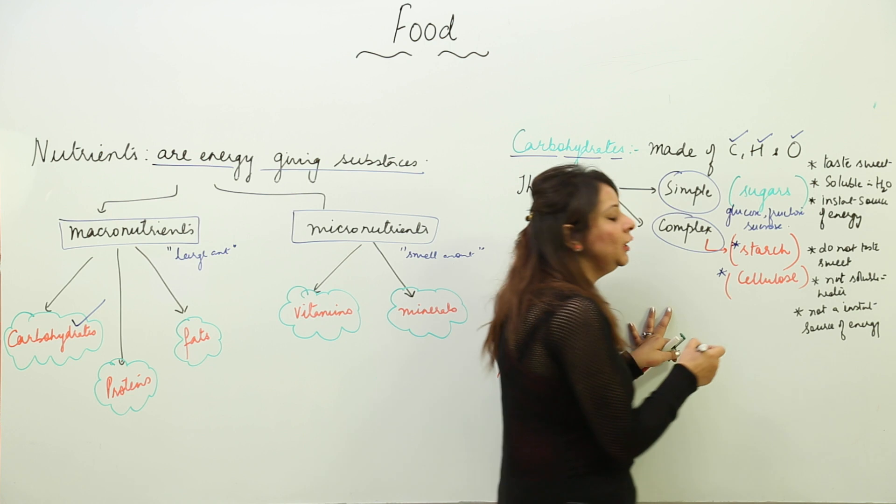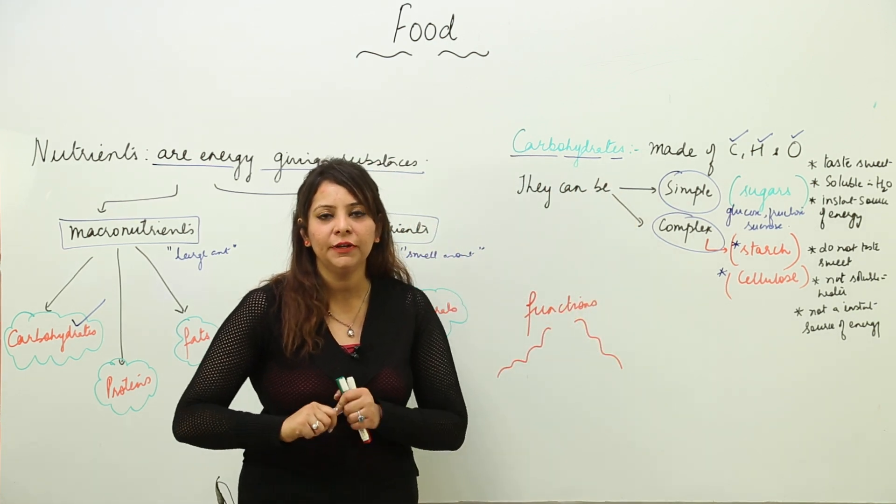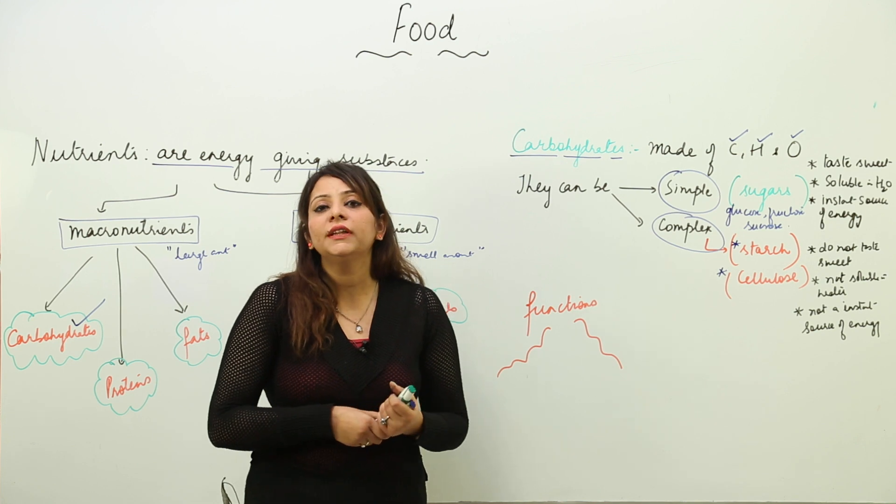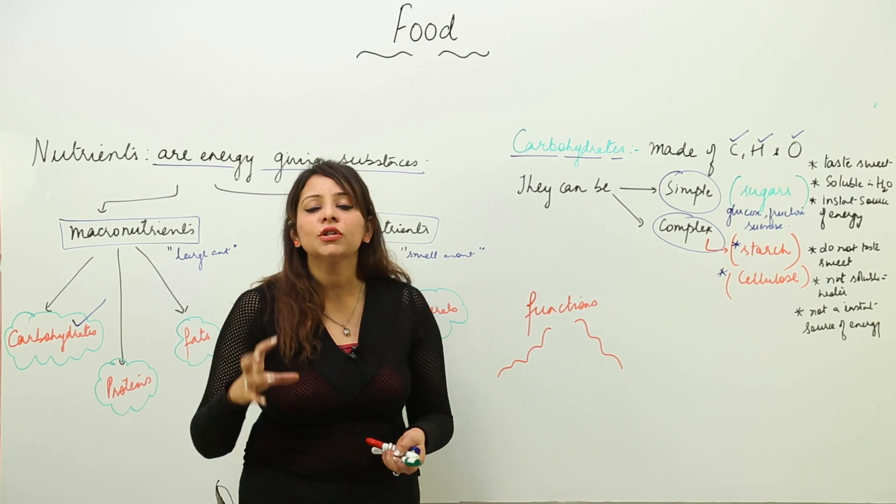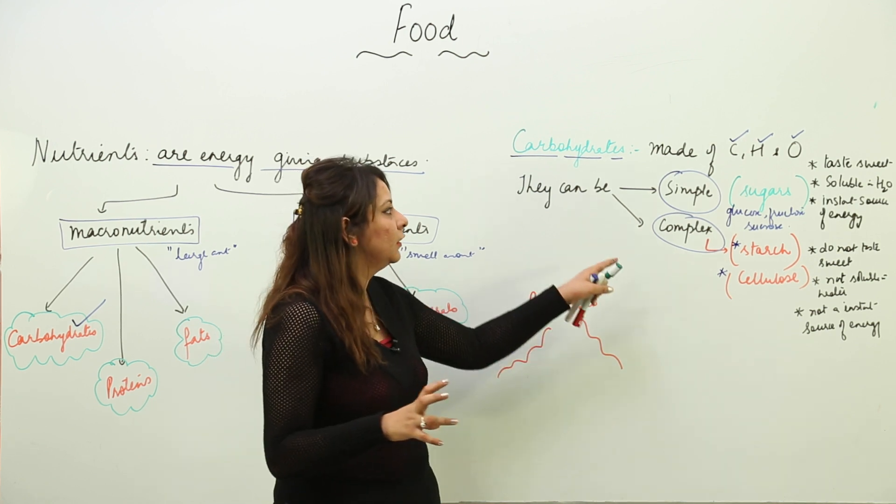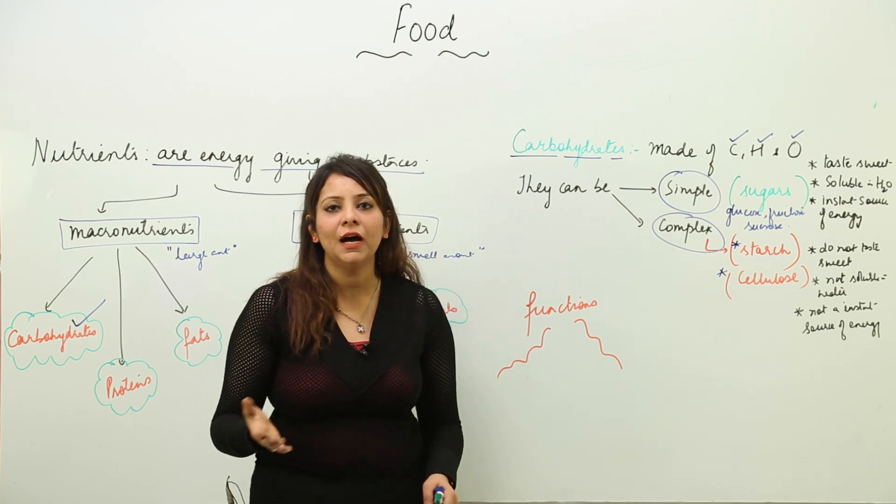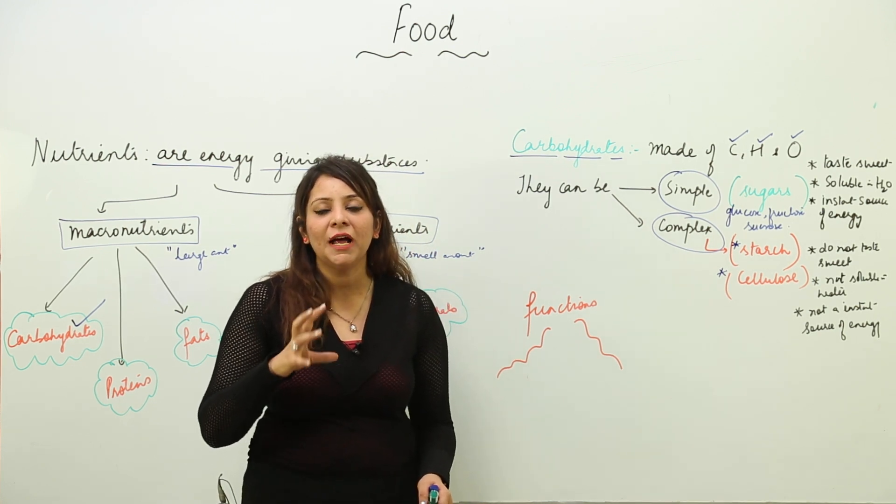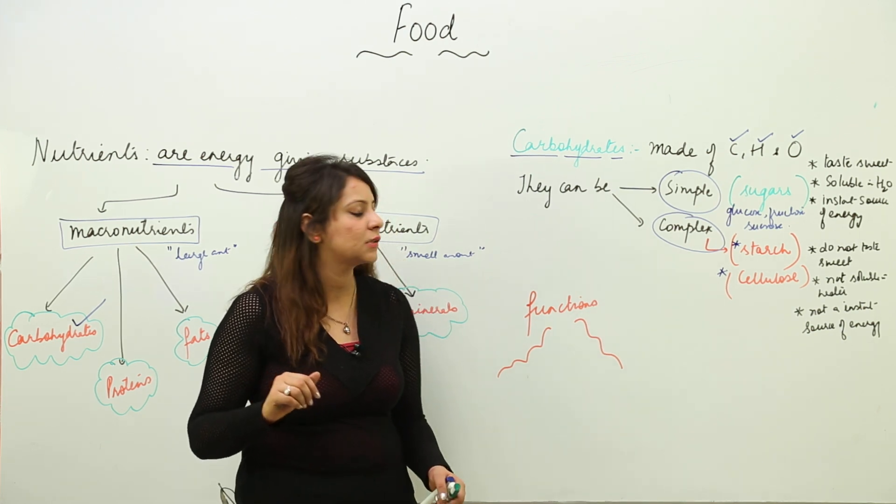Complex carbohydrates are starch and cellulose. The potato we eat - we are actually fond of eating potatoes - contains starch. Rice contains starch. Starch is a complex carbohydrate. Cellulose is the cell wall of all plant cells. It is a main component of the cell wall of plants.